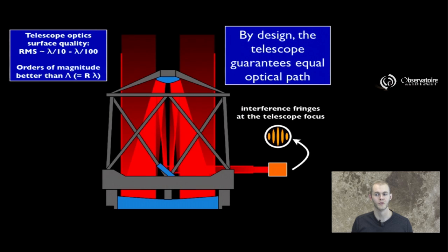By design, a telescope is going to guarantee equal paths traveled from the star itself all the way down to the detector. And if you put an aperture mask in front of the telescope, you are going to be able to observe interference fringes there.